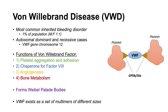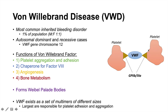Von Willebrand factor exists as multimers of different sizes, and the largest multimers are responsible for platelet aggregation and adhesion. Larger von Willebrand factor multimers are able to bind to even more platelets, forming larger platelet aggregates, which is why the largest multimers are most important for platelet adhesion and aggregation.